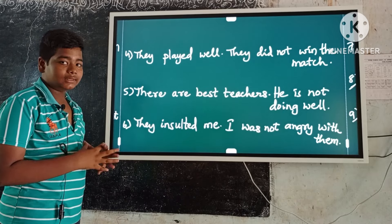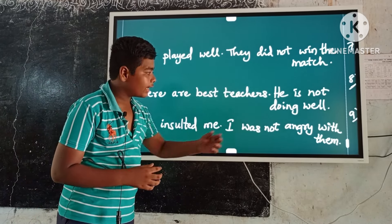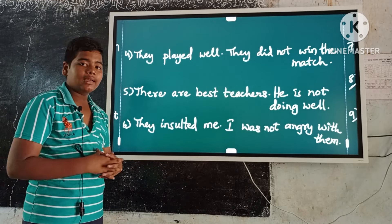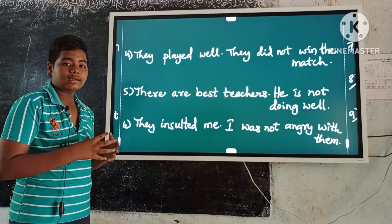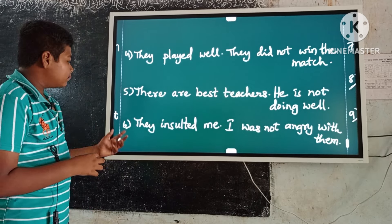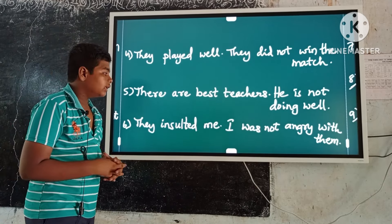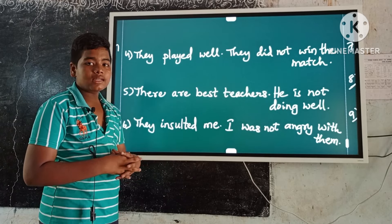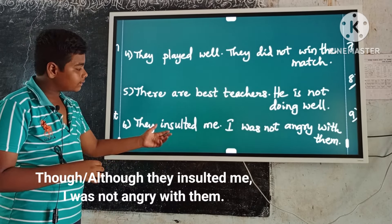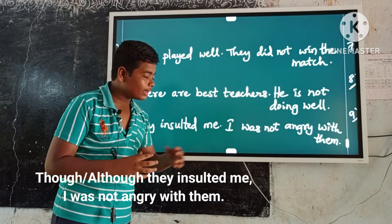Example number six: They insult me. I was not angry with them. These are contrast ideas. Here the first occurring sentence is 'they insult me.' Keep though or although before it, and a comma before the second sentence. So the answer is: Though they insult me, I was not angry with them.